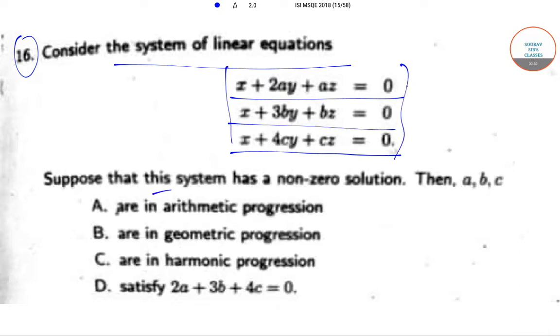Now, if this system has a non-zero solution, then a, b, c: are in arithmetic progression, are in geometric progression, are in harmonic progression, or satisfy the equation 2a plus 3b plus 4c equals 0.